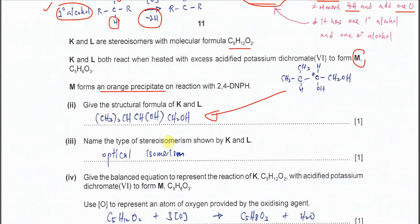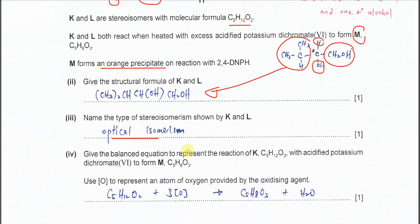Name the type of stereoisomerism shown by K and L. Okay, they must be optical because it has one chiral carbon here. This carbon bonded to one, two, three, four groups. So it has chiral carbon, means it will show optical isomerism. Okay, part four.